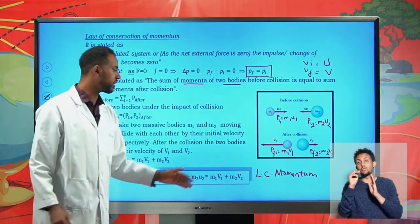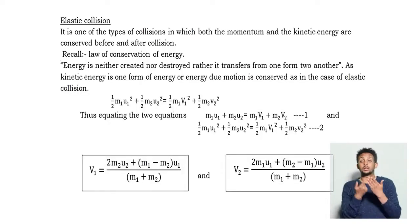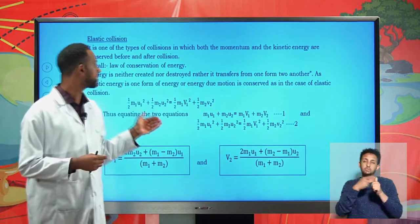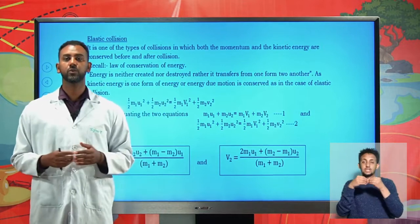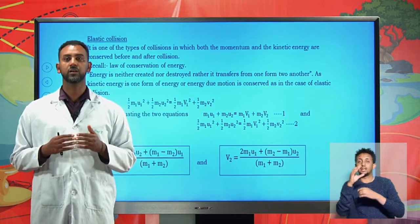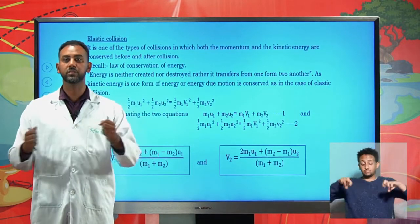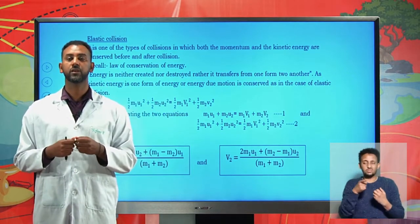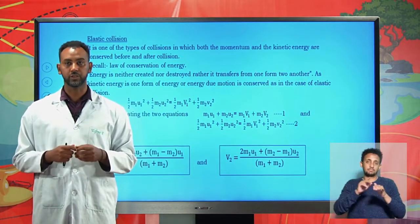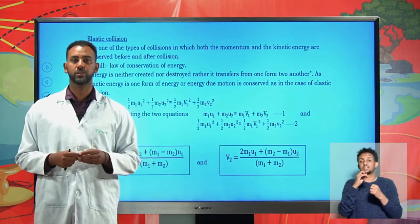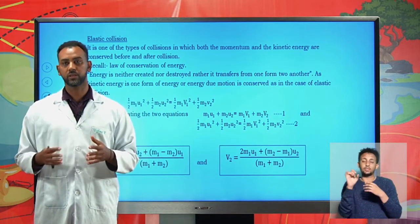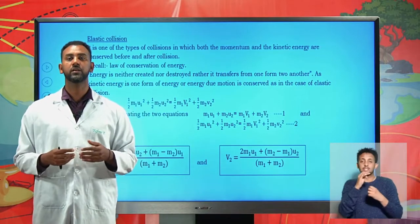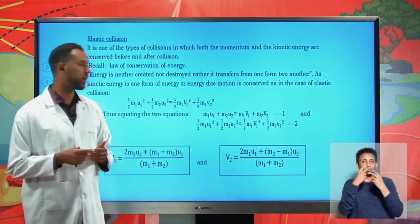We have three types of collision depending on the law of conservation of energy. The first type is elastic collision. Under elastic collision, both the momentum and the kinetic energy remain constant. The other type is inelastic collision. For inelastic collision, momentum remains constant before and after collision, but the kinetic energy differs — the kinetic energy after collision is less than the kinetic energy before collision. Let's examine each one by one, starting with elastic collision.